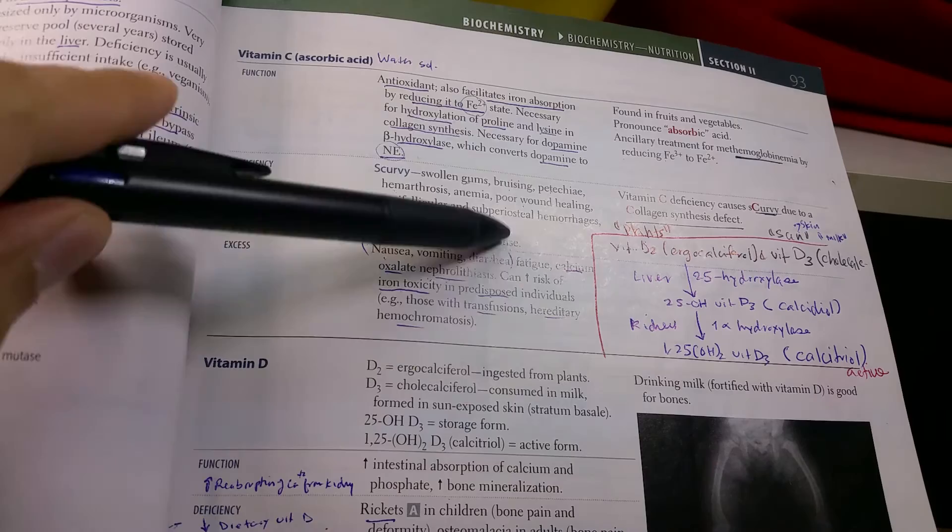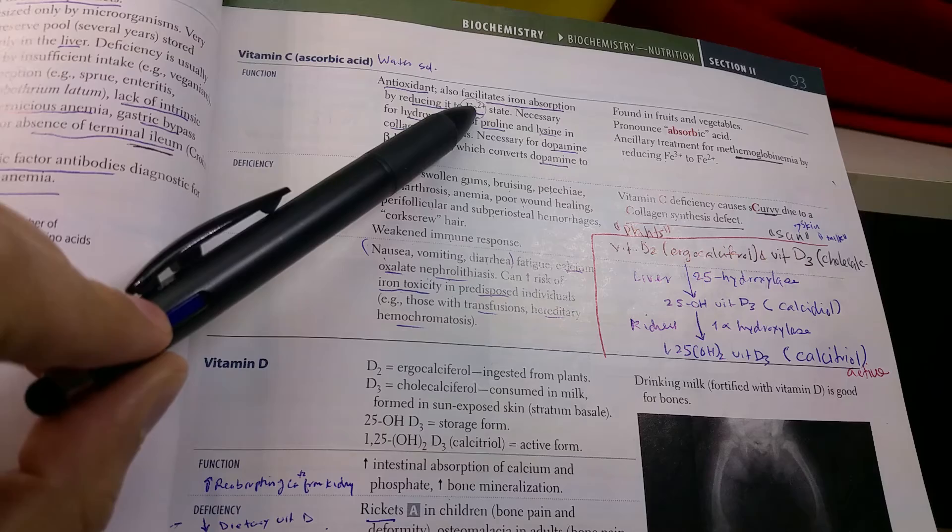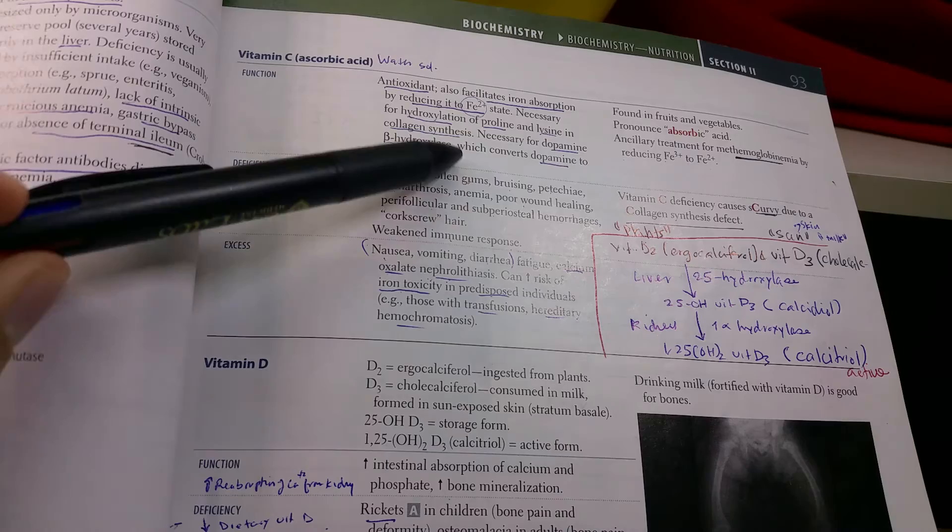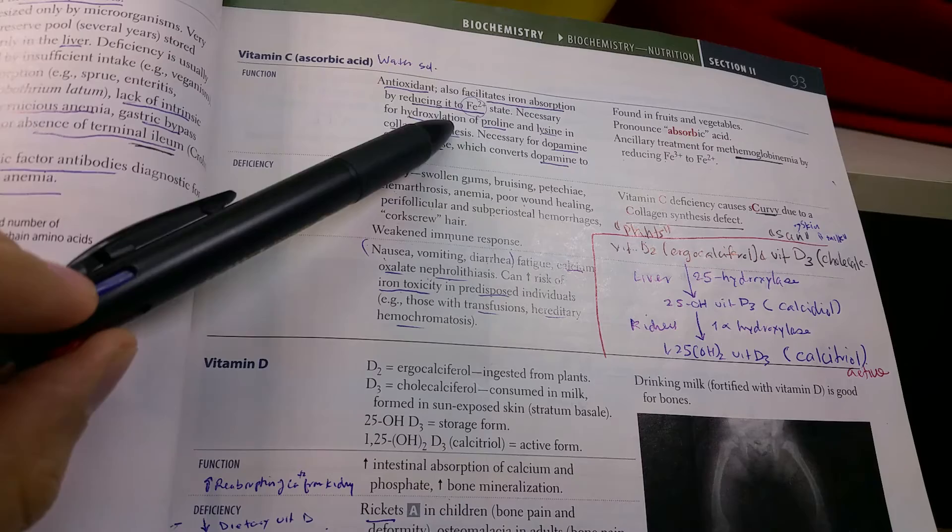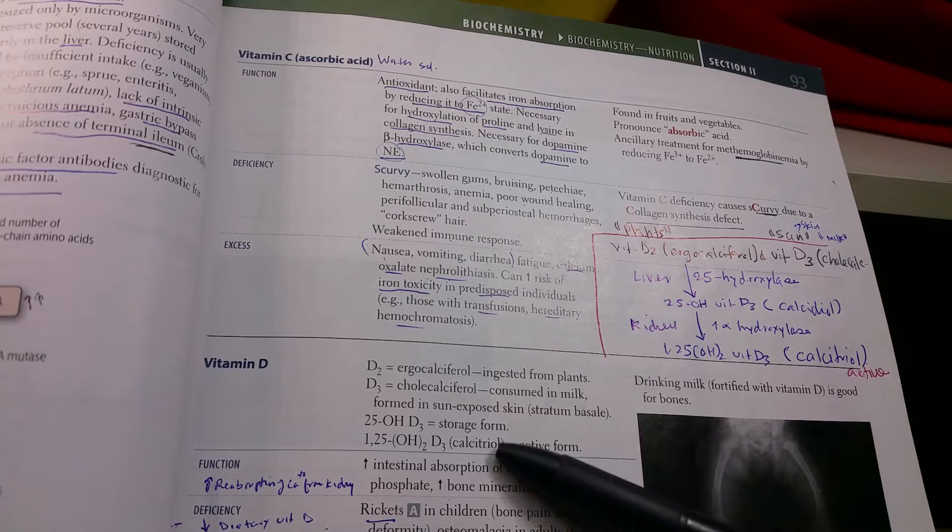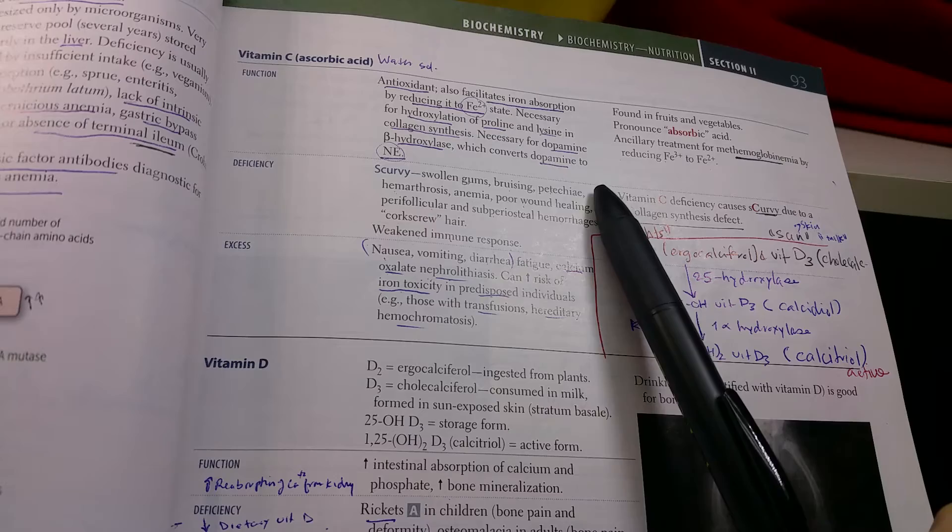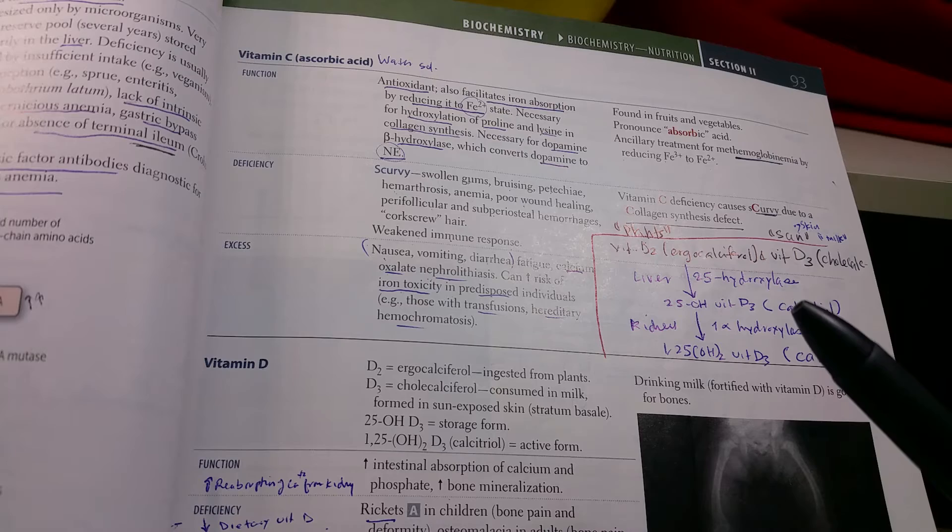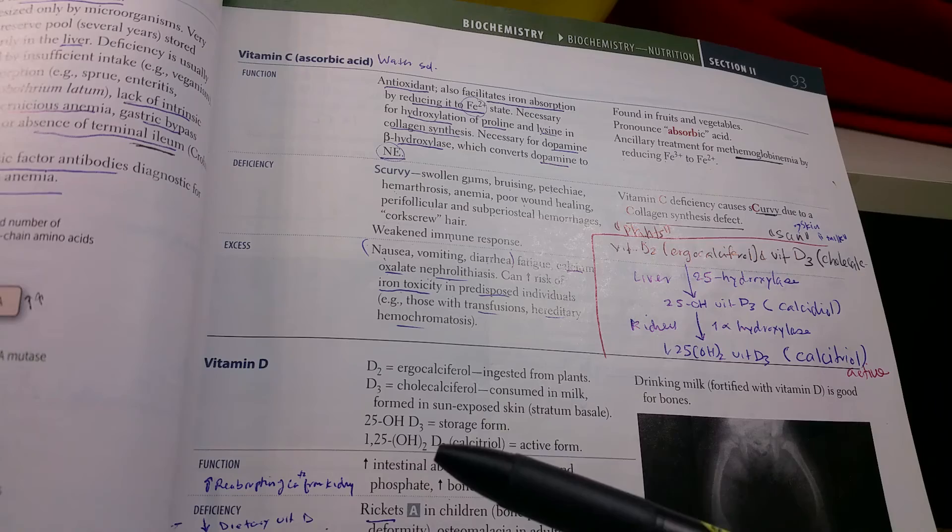We'll talk now about vitamin C, ascorbic acid, which is an antioxidant. It reduces iron, making it easier to absorb. That's why we say take orange juice with iron. It's very important for collagen, for hydroxylation of proline and lysine. It's also necessary for dopamine, converting dopamine into norepinephrine.